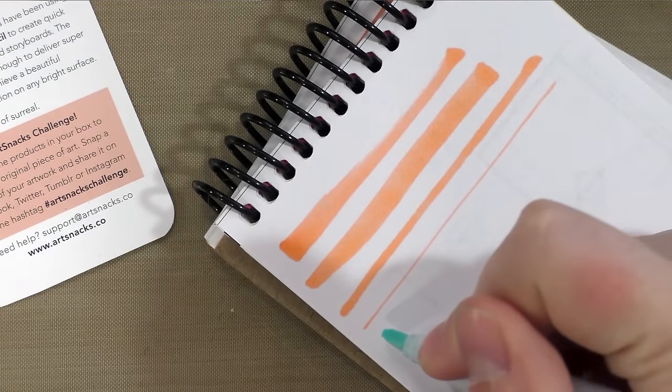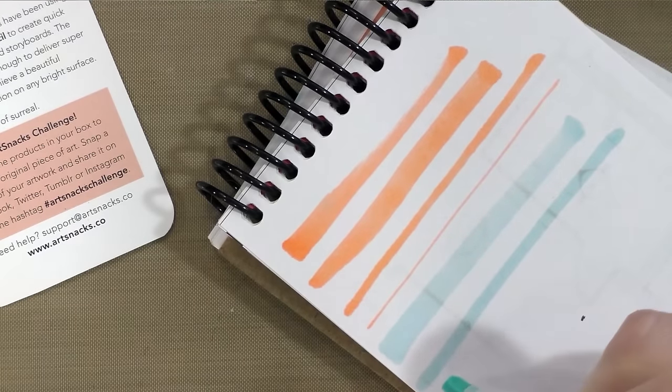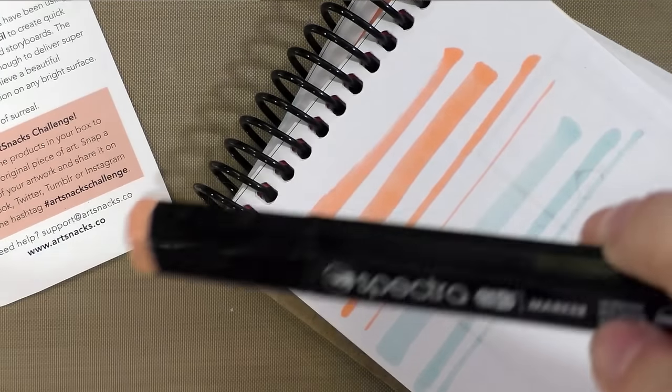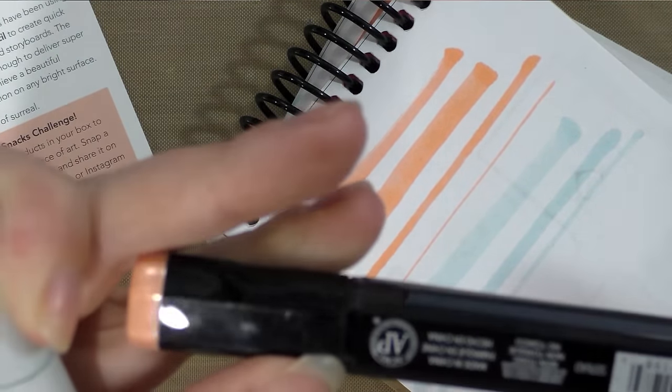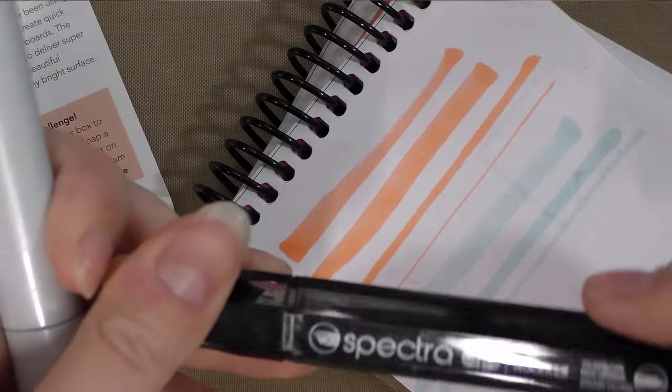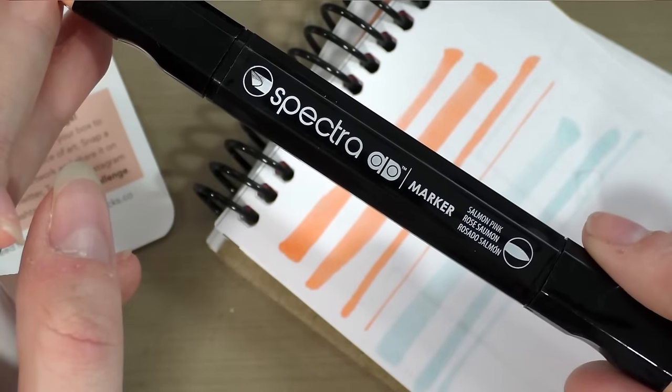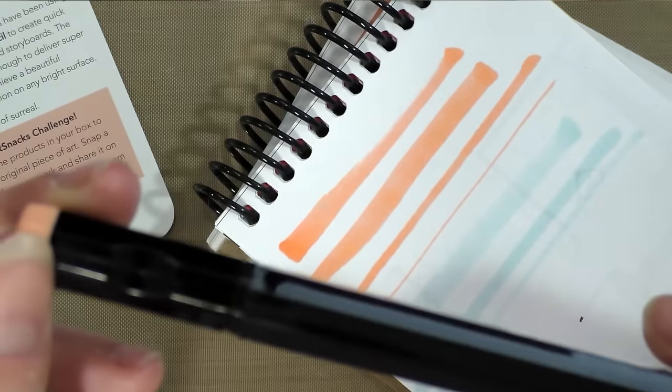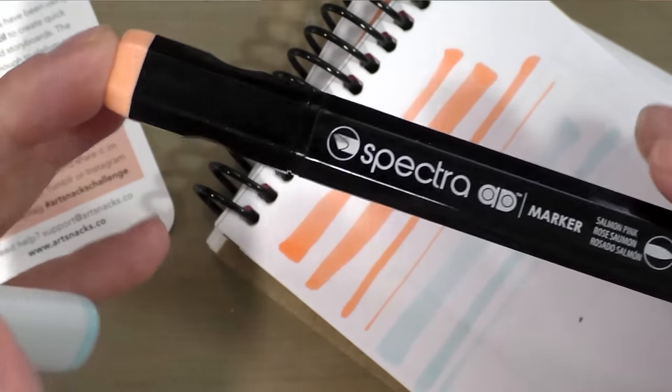So, this is the chisel nib on a Copic. One, two, not as fine as the tri-nib on the Spectra. And just given the body shape and the price point, I'm fairly sure that the Spectras are not refillable, but I will have to look into this. And I'm pretty sure they don't use the same solution as the Chart Pack AdPro markers. These are alcohol-based, whereas I have a feeling, I know that the Chart Pack markers are not actually alcohol-based. They have a different solvent in them.